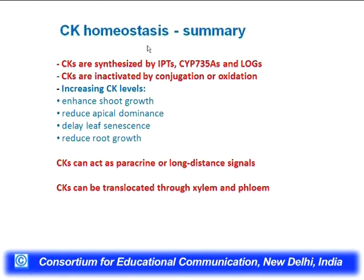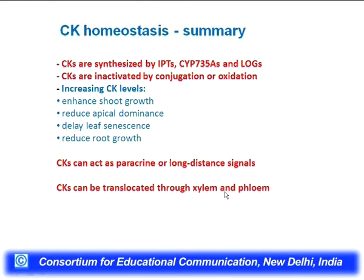Summary of cytokinin homeostasis: cytokinins are synthesized by IPTs and other genes. They are inactivated by conjugation or oxidation. Increasing cytokinin levels enhances shoot growth, reduces apical dominance, delays leaf senescence, and reduces root growth. Cytokinin can act as a paracrine or long-distance signal and can be translocated through xylem and phloem.